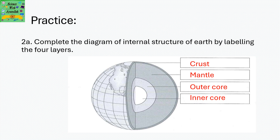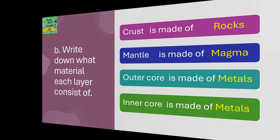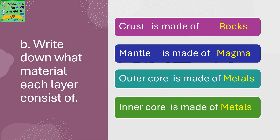Practice. Complete the diagram of the internal structure of the earth by labeling the four layers. This diagram is very important and you must know how to label them. Write down what material each layer consists of.